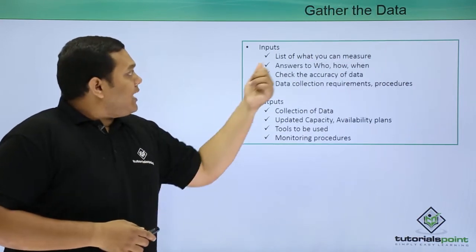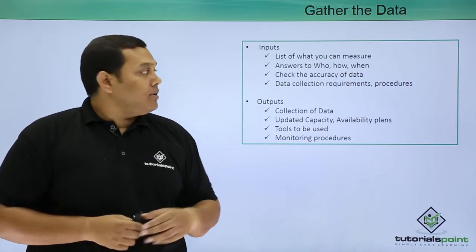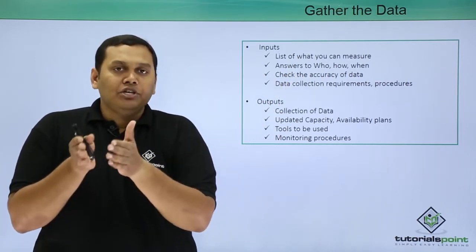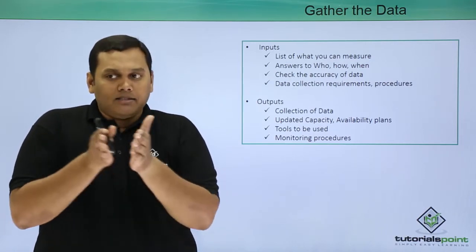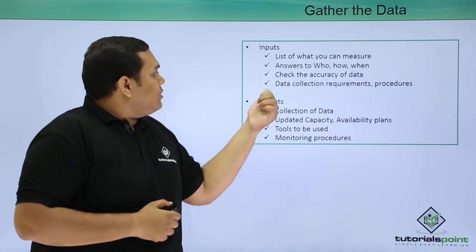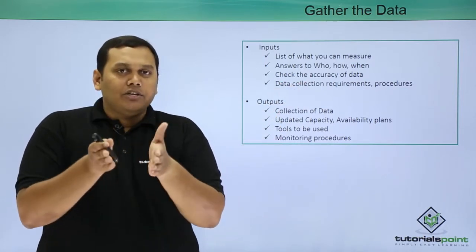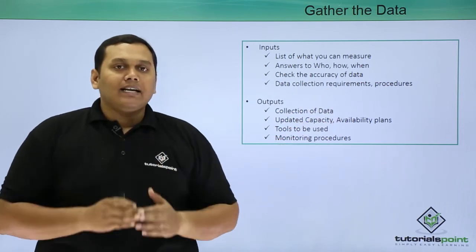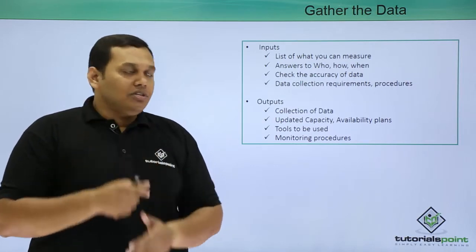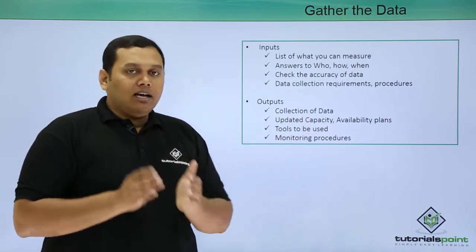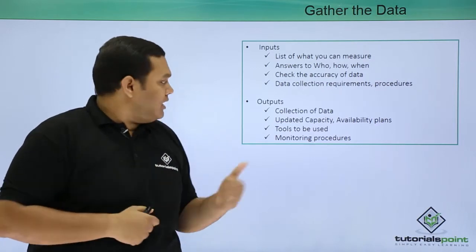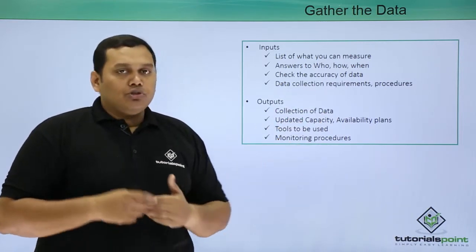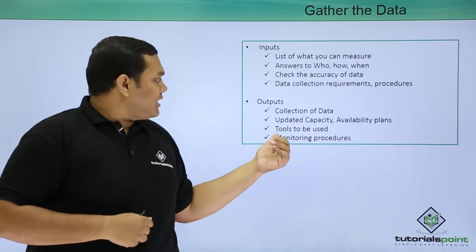Step 3 is gather the data. The inputs are the list of what you can measure, answers to who, whom, and when — meaning a matrix of who to call or assist at particular times. You also check the accuracy of data, and data collection requirements and procedures are inputs here. The outputs are a collection of the gathered data, updated capacity and availability plans, tools to be used, and monitoring procedures.